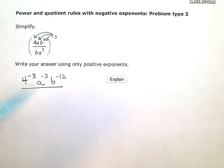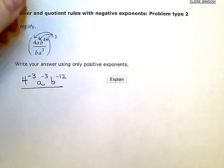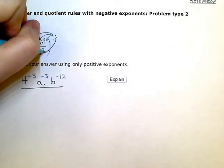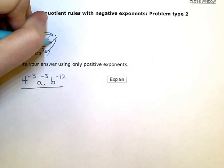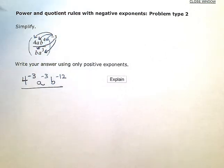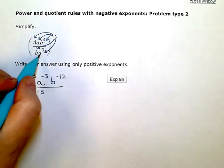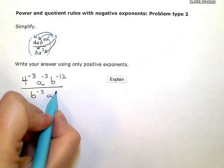Now, I'm going to do the same thing in the denominator. This negative three is going to get multiplied by both factors down here. So, I'll have b to the negative three and a to the negative ninth.